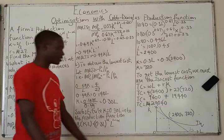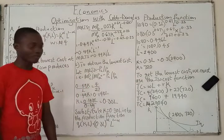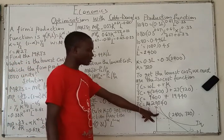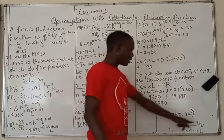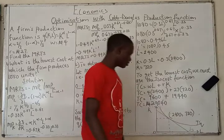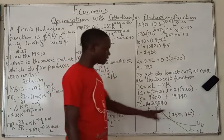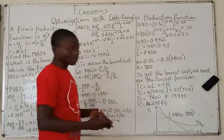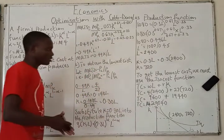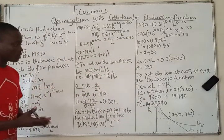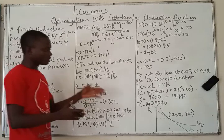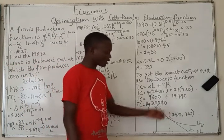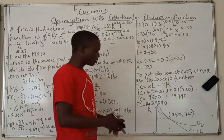This is a diagrammatic representation of what we've worked out, where the line represents the iso-cost and the curve represents the iso-quant, with capital on the vertical axis and labor on the horizontal axis. The optimizing position is where the iso-cost is tangential to the iso-quant, at L = 2,400 and K = 720.